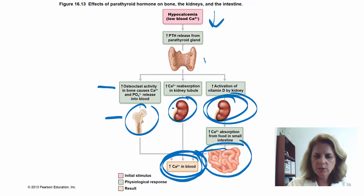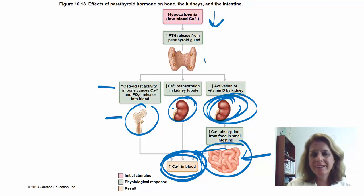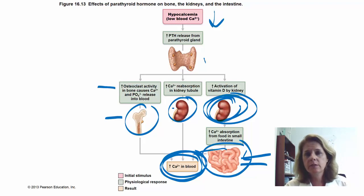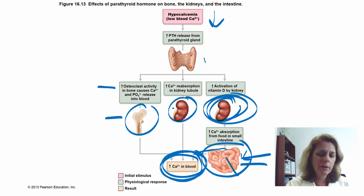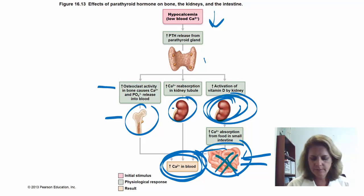The small intestine is not really a direct target — parathyroid hormone is not binding to the small intestine. The actual target is the kidney, but the result is you get vitamin D, which causes reabsorption of calcium in the small intestine. So PTH causes an event to occur indirectly in the intestine through vitamin D.